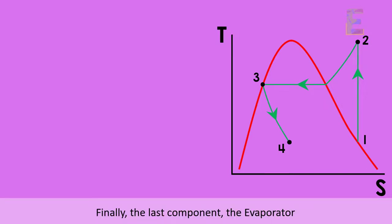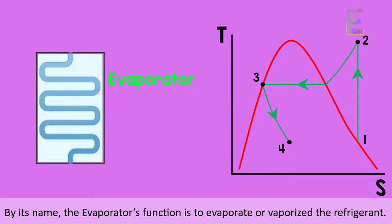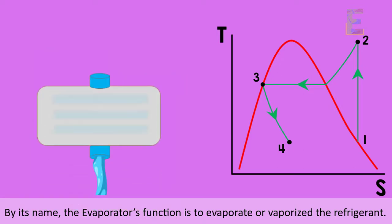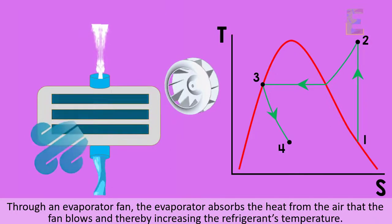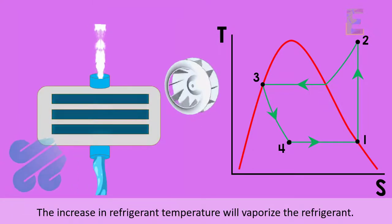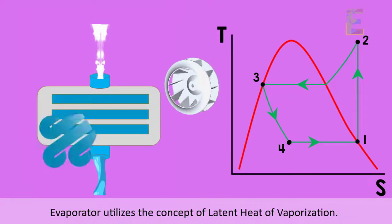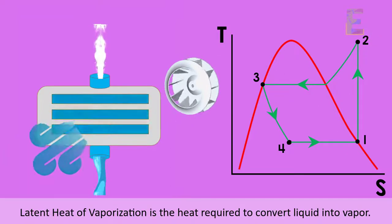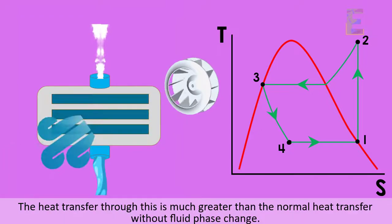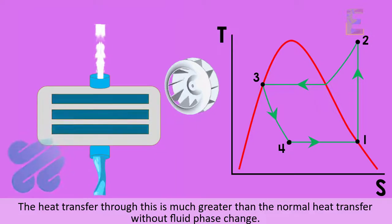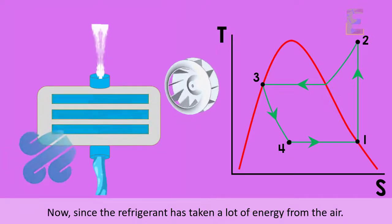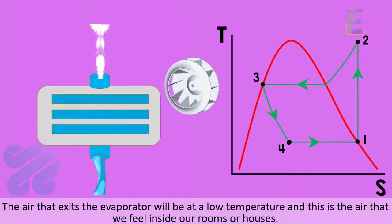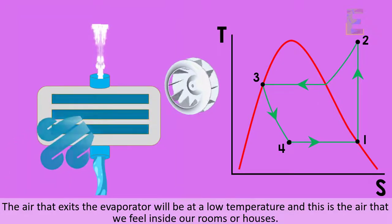Finally, the last component, the evaporator. By its name, the evaporator's function is to evaporate or vaporize the refrigerant. Through an evaporator fan, the evaporator absorbs the heat from the air that the fan blows and thereby increasing the refrigerant's temperature. The increase in refrigerant temperature will vaporize the refrigerant. The evaporator utilizes the concept of latent heat of vaporization. Latent heat of vaporization is the heat required to convert liquid into vapor. The heat transfer through this is much greater than the normal heat transfer with a fluid phase change. Now, since the refrigerant has taken a lot of energy from the air, the air that exits the evaporator will be at a low temperature. And this is the air that we feel inside our rooms or houses.